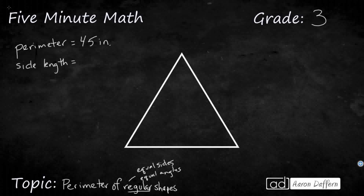We have a regular triangle right here, but we actually have a specific name for this triangle. This is an equilateral triangle. Just like a few other shapes that have specific names if they're regular — most of them are just going to be called a regular hexagon, or a regular decagon, or a regular octagon. But regular triangles are called equilateral triangles, and regular quadrilaterals are called squares.